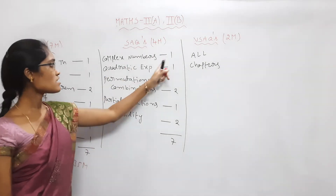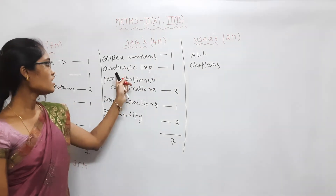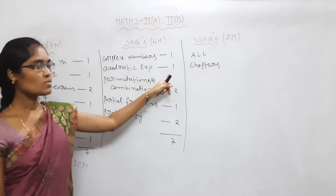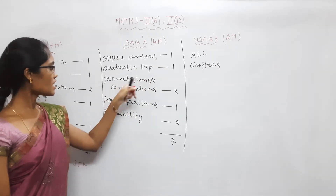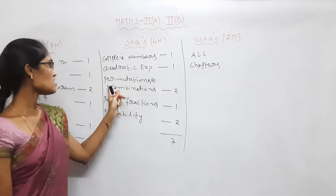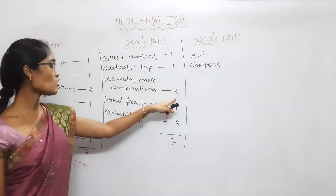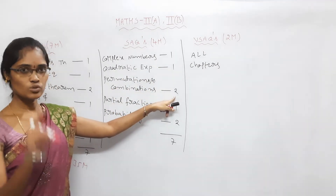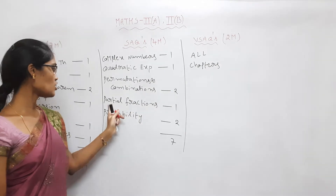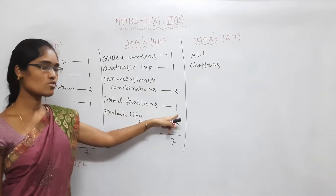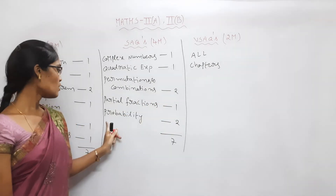Next are SAQs. The SAQ topics include: complex numbers, quadratic expressions, equations, and permutations and combinations — which account for 2 SAQs. Partial fractions also has 2 SAQs.